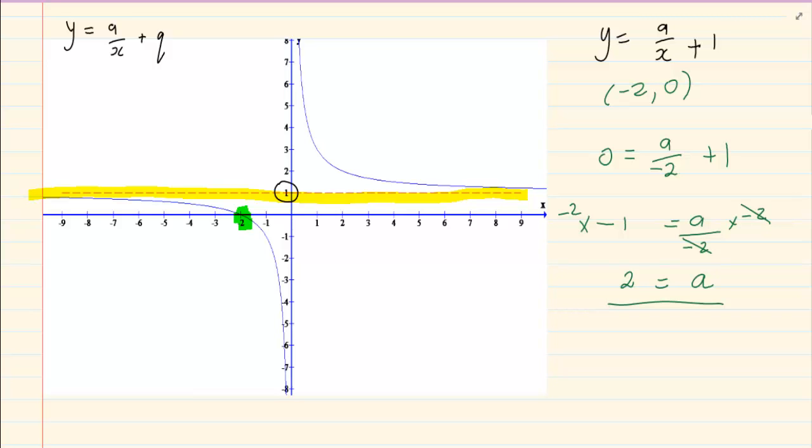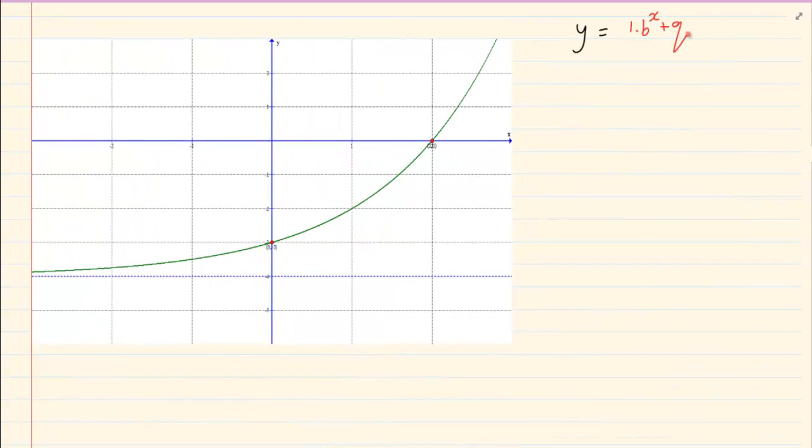But you have to rewrite. So we have y equals 2 over x plus 1. Now let us look at the exponential graph.